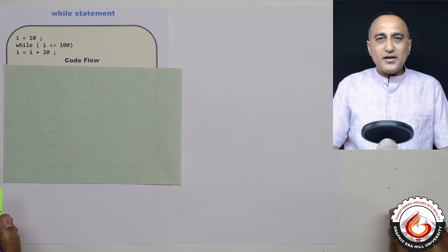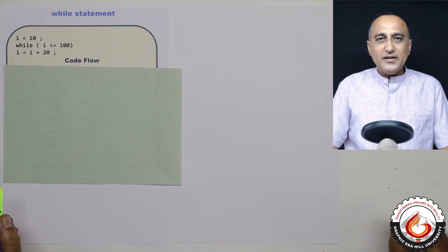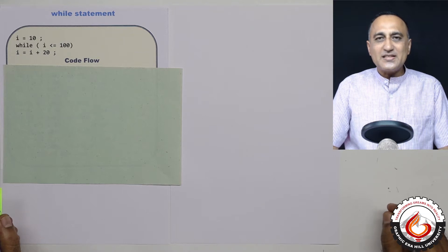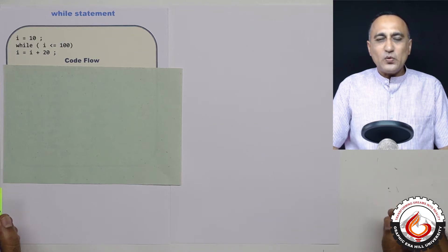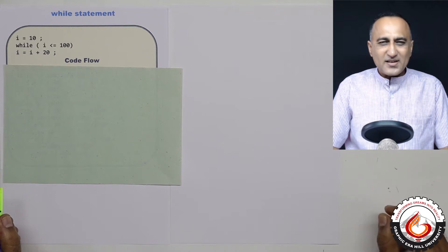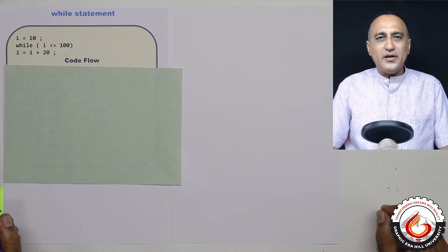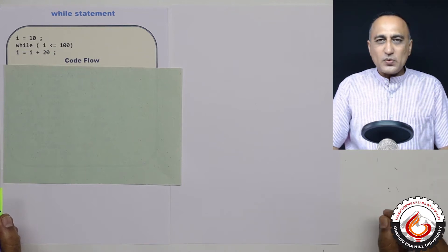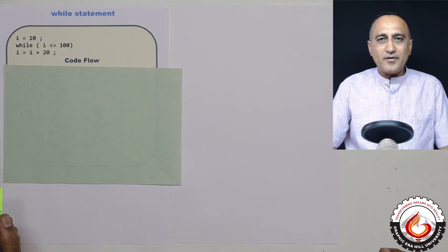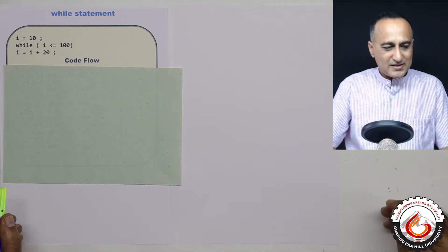We shall now take a look at the first looping statement in C. This is called the while statement or the while iteration statement. It is a very simple statement, so the best way to understand it is to do a code flow or a code trace through an example.